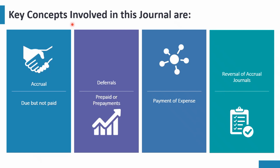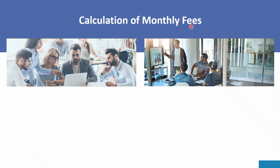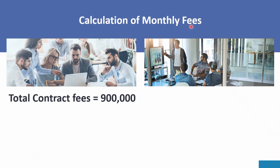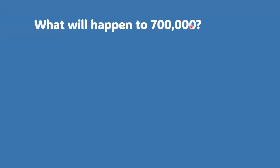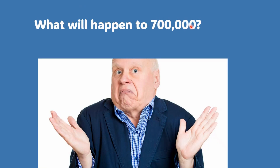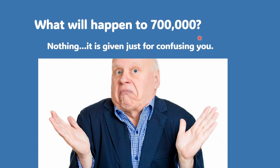Make sure you are watching with full attention. First, we will calculate the monthly fees. The total contract amount was nine lakh rupees — not seven lakh — because the actual agreed contract amount was nine lakh rupees. This nine lakh was for three months, so dividing by three gives three lakh rupees per month. As for the seven lakh rupees, it is simply given to confuse you — it has no use, so ignore it.